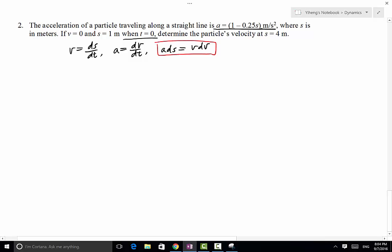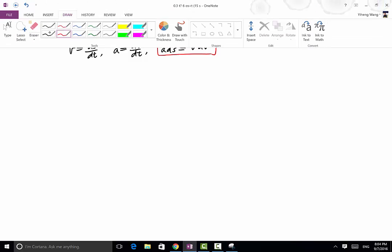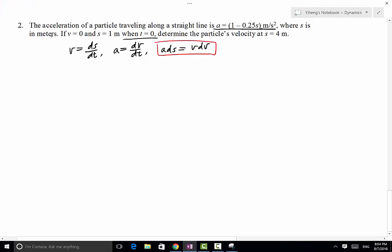Because we have a expressed as a function of s, therefore we have (1 minus 0.25s) ds equals v dv. As you can see, the variables have already been separated. On the left-hand side we only have expressions involving s, on the right-hand side we only have v. Therefore we can just integrate directly.